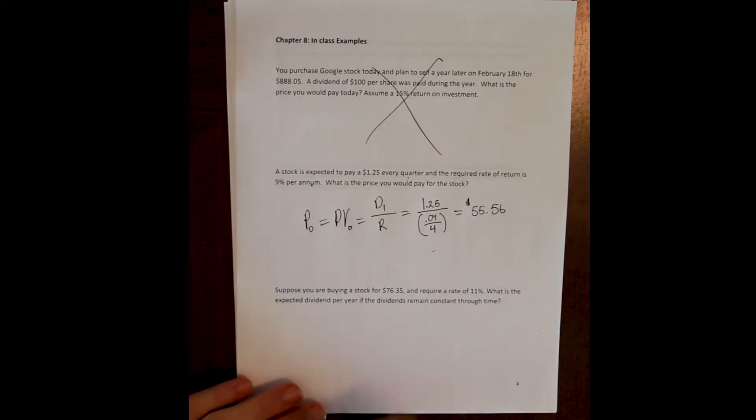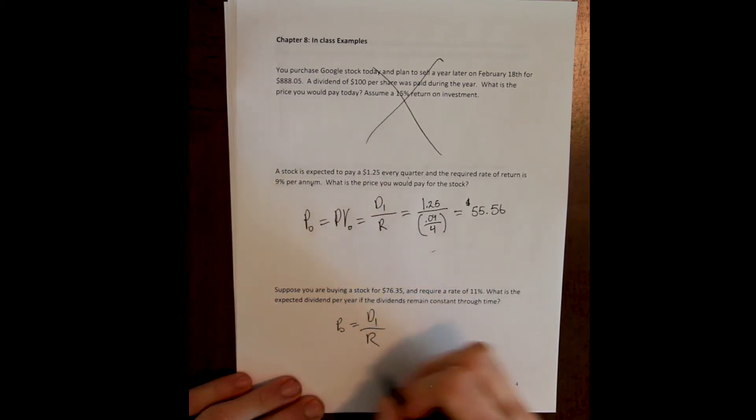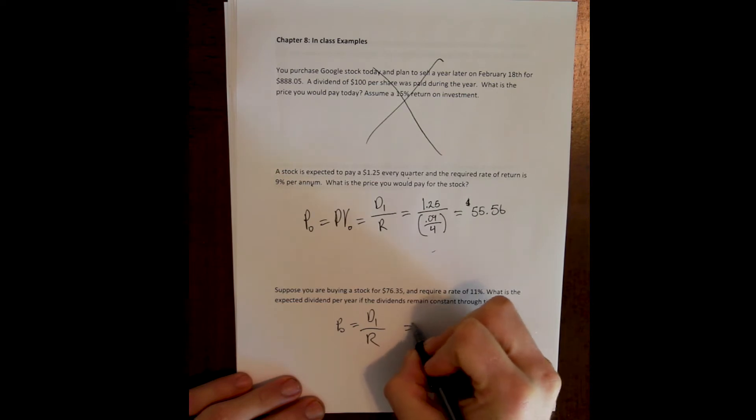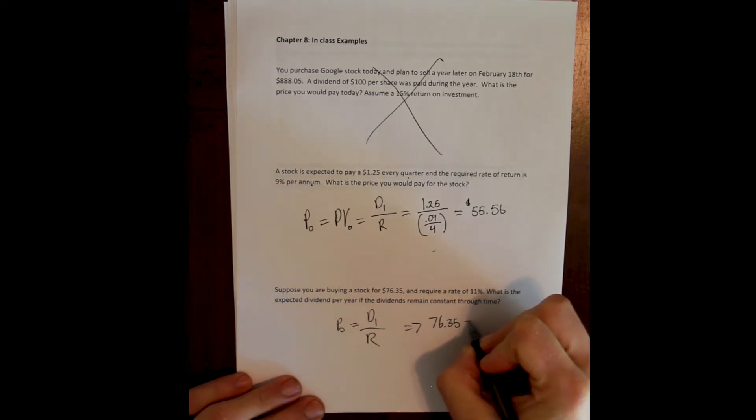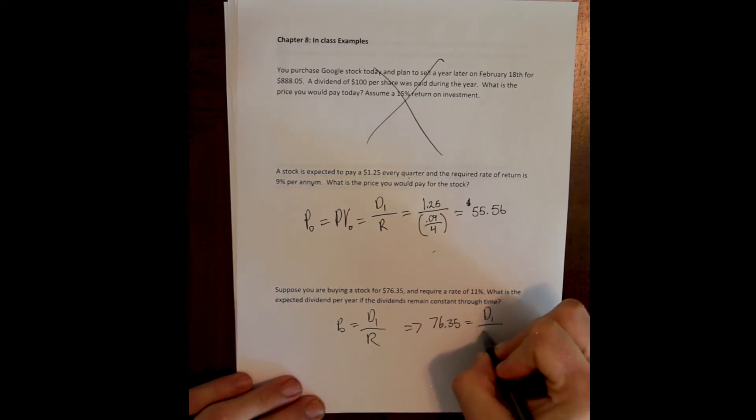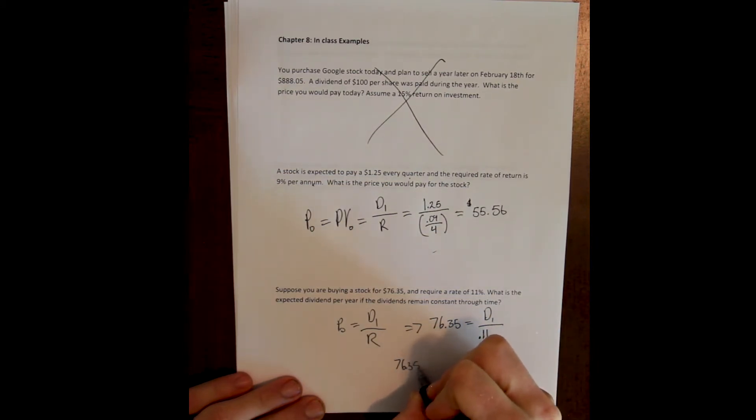If I know that the price is equal to the dividend divided by the rate, and I am given the price and the rate, I can solve for the dividend. I do a little bit of algebra here: $76.35 times 11% gives me the dividend, and it gives me the dividend to be $8.39.